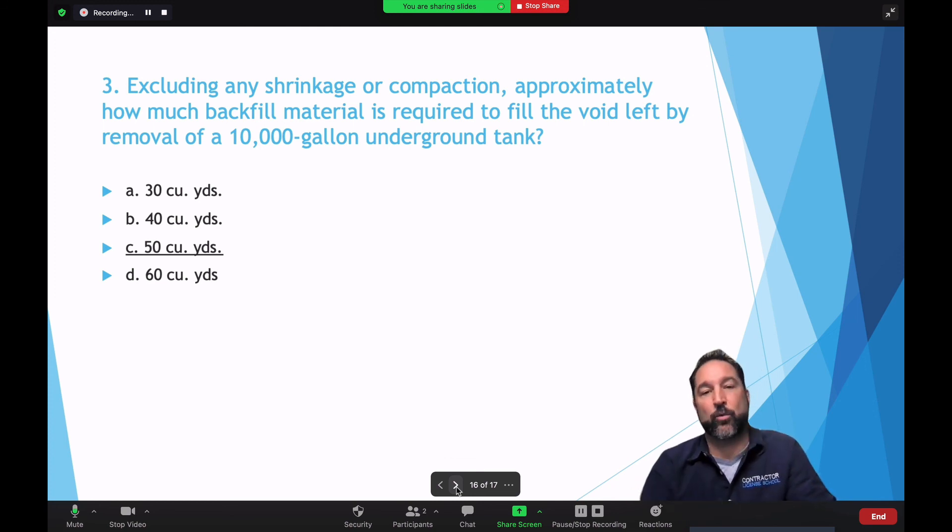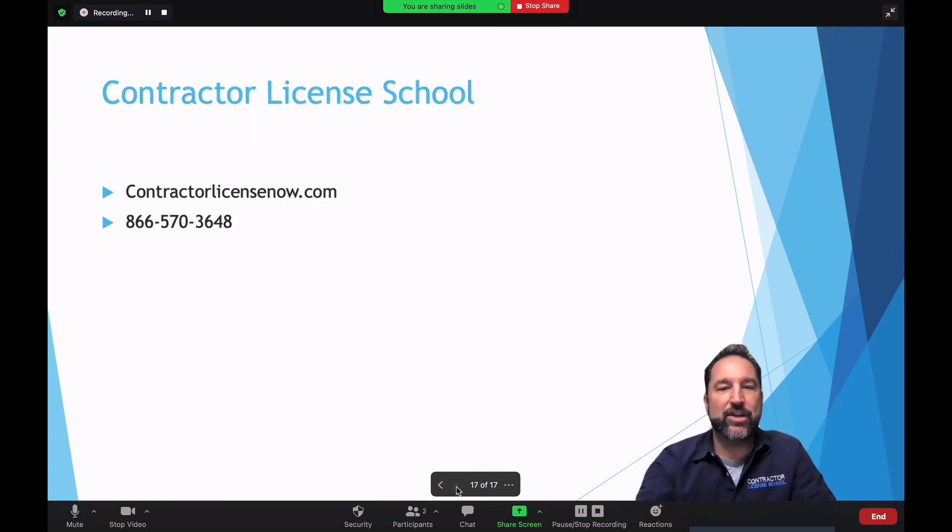Hey, we want to help you pass the exam. That's what we're here for. We're the Contractor License School. Our passion is your success, ladies and gentlemen. You can get ahold of us by going to contractorlicensenow.com or giving us a call at 866-570-3648. We look forward to getting you through this program, getting you your contractor's license, building relationship with you, and seeing you thrive in the construction trades as an entrepreneur that owns a construction business. You guys have a great week. We'll talk to you soon. Bye-bye.